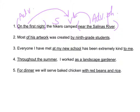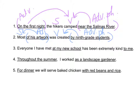'Most of his artwork was created by ninth grade students.' Let's mark them with our parentheses. Find the verb: 'was created.' What was created? Most was created. 'Of his artwork' modifies 'most,' which is a pronoun, so it is an adjective phrase. 'By ninth grade students' — it was created by ninth grade students, so this is an adverbial phrase modifying the verb.